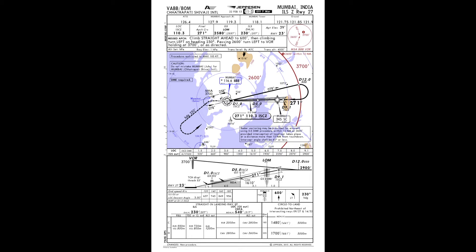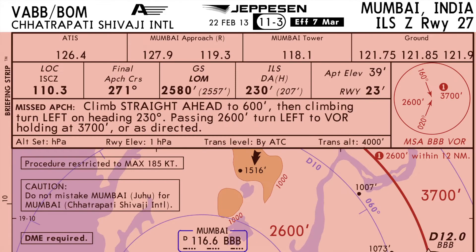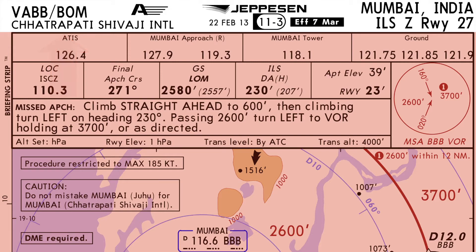We will start with the header of the chart. In the top left corner of the chart, the ICAO code of the airport, VABB, is printed. This is followed by the three-letter IATA code, which is BOM for this airport. The name of the airport is also mentioned here.